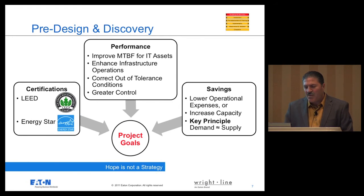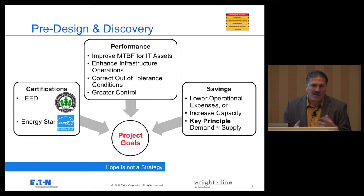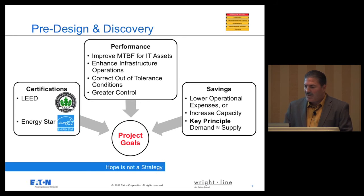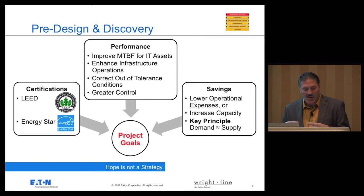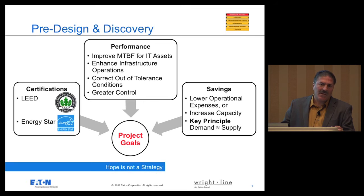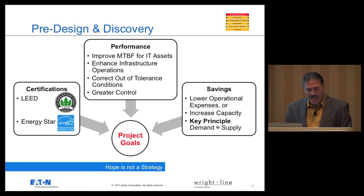Also as part of this phase, it's important to define utility rebates and look at certifications the team wants to comply with, such as LEED and ENERGY STAR for energy savings, high-efficiency UPSs, or ENERGY STAR-rated servers. They may set performance goals like correcting audit tolerance conditions within the data center. All of these things are important to building a project plan and setting goals. This helps stakeholders develop their CAPEX plan and proposal for upper management to gain approval. Hope is not a strategy — you've got to have a solid plan.